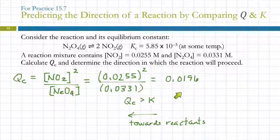When QC is smaller than K, and we need to make it larger, we do the opposite. We want to increase the product concentrations, decrease the reactant concentrations. Does that make sense?